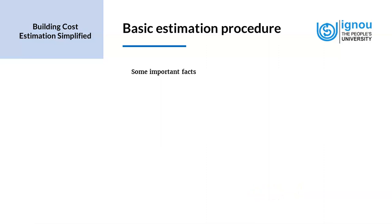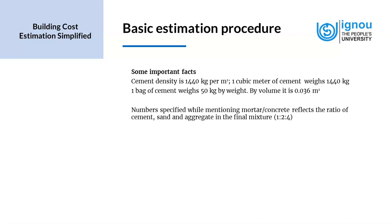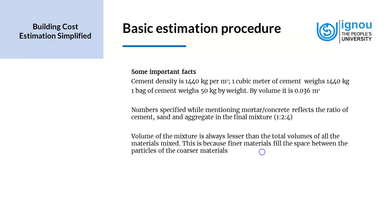Some important facts to help us: cement density is 1440 kg per cubic meter, which means one cubic meter of cement weighs 1440 kg. One bag of cement weighs 50 kg by weight, which by volume is 0.036 cubic meters. The numbers specified while mentioning mortar or concrete reflect the ratio of cement, sand and aggregate in the final mixture — so 1:2:4 implies that in the final mixture the cement-sand-aggregate ratio is 1:2:4. We must remember that the volume of the mixture obtained after mixing all components is always less than the total volume of all materials mixed, because the finer materials fill the space between the particles of the coarser materials.